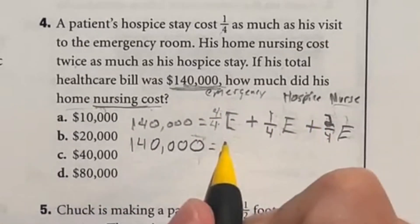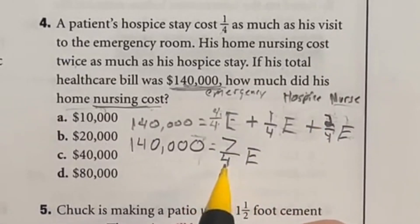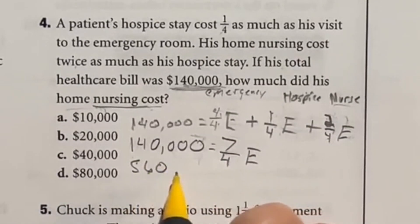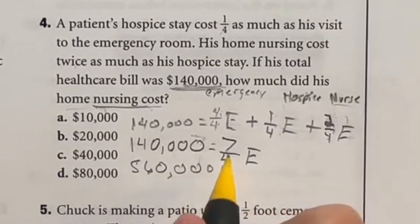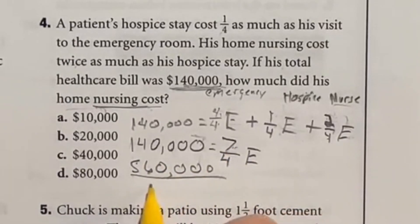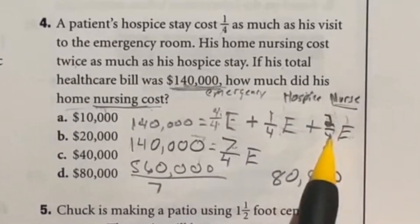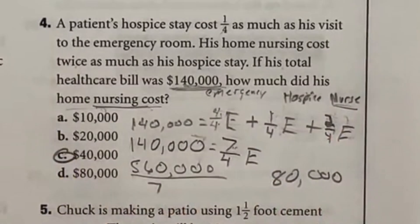So four plus one plus two is going to give me seven over four E. Now we have to solve for E. We're going to multiply four to the other side. Four times 140,000 is going to give me 560,000. And then we need to divide that by that seven on top. So divide by seven. Well, 56 divided by seven is eight, so that's just going to end up giving me 80,000. Now that's E and the nursing is half of that because two over four is a half. So divide that by two and you get C, 40,000.